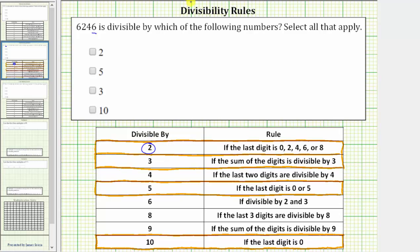A number is divisible by 3 if the sum of the digits is divisible by 3. So for this test, we must sum the digits of 6,246, which would be 6 plus 2 plus 4 plus 6, which is equal to 18.